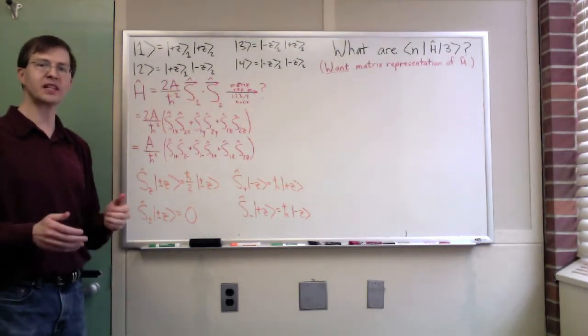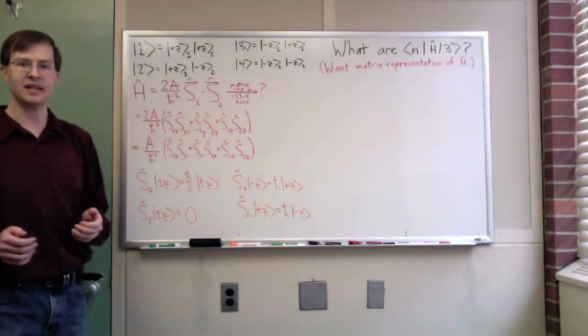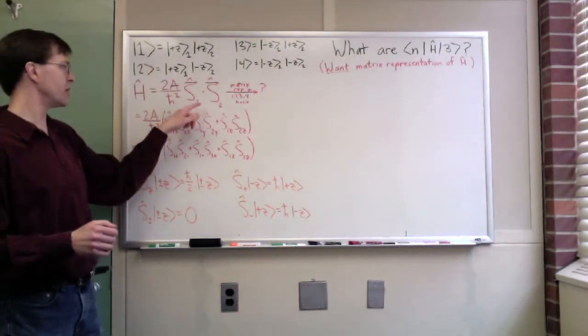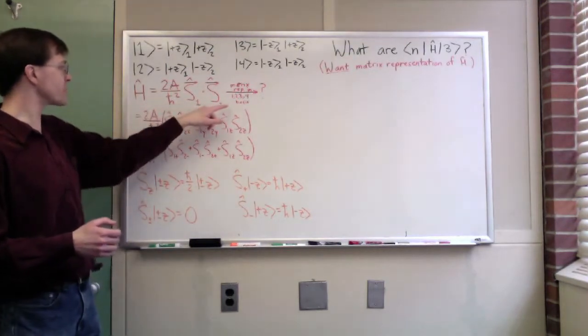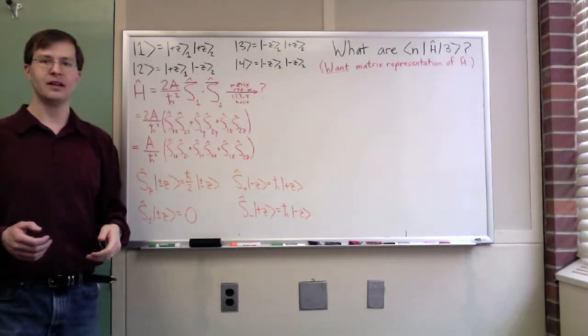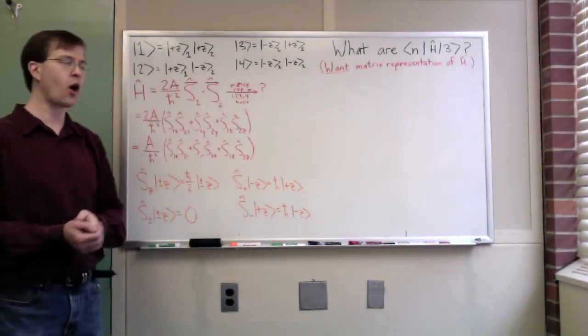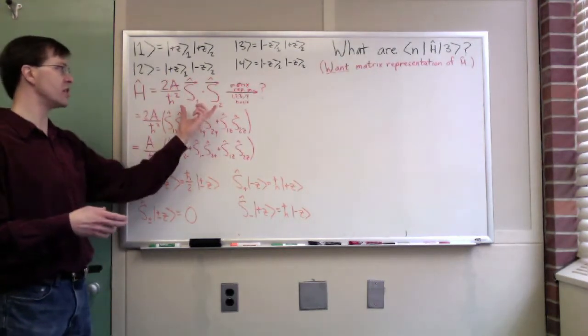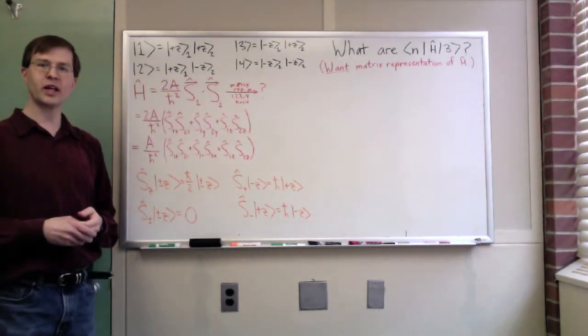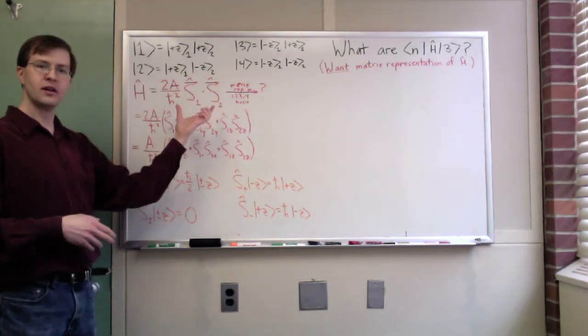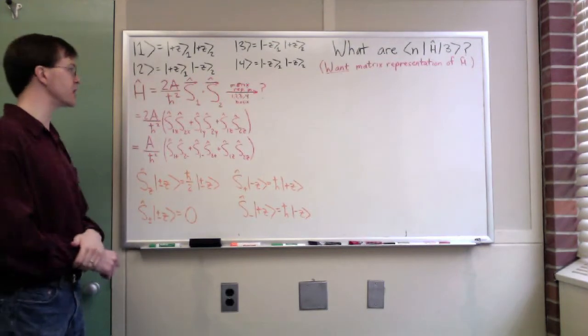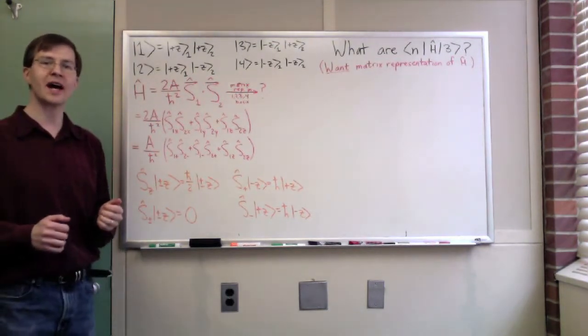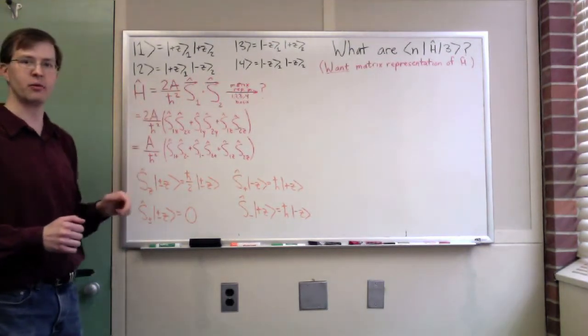Now, ultimately, what we would like to find is a matrix representation in our known basis. That's our goal. We don't have that. All we have is this definition in terms of the product of spins. The neat thing is we can actually use this definition and plug through with some of the known tools we have for dealing with spins and spin states, and we can use that to find our matrix representation of the Hamiltonian.